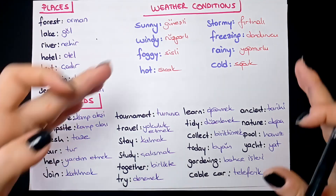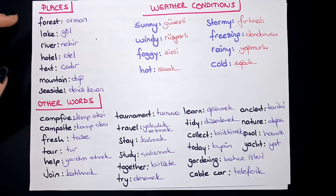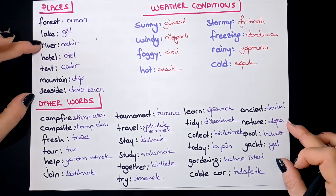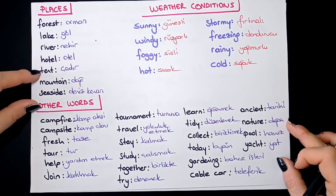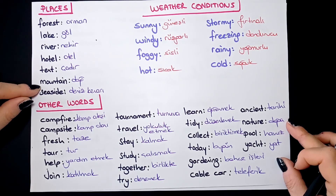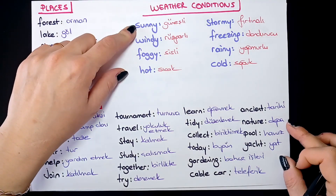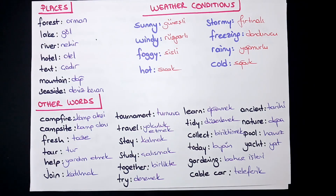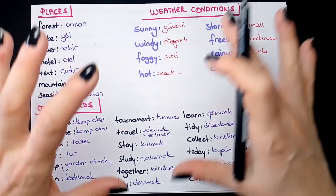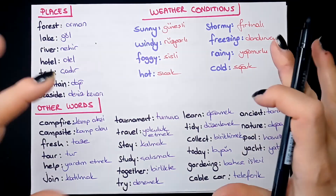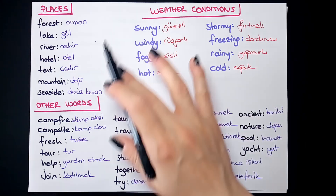Şimdi tatil yerleri ve hava durumlarından bahsedeyim. Tatil yerleri: forest (orman), forest camp, lake (göl), river (nehir), hotel (otel), tent (çadır), mountain (dağ), seaside (deniz kenarı). Weather conditions: sunny (güneşli), windy (rüzgarlı), foggy (sisli), hot (sıcak), stormy (fırtınalı), freezing (dondurucu), rainy (yağmurlu), cold (soğuk). Bunlar da weather conditions — tekrarlayın lütfen.